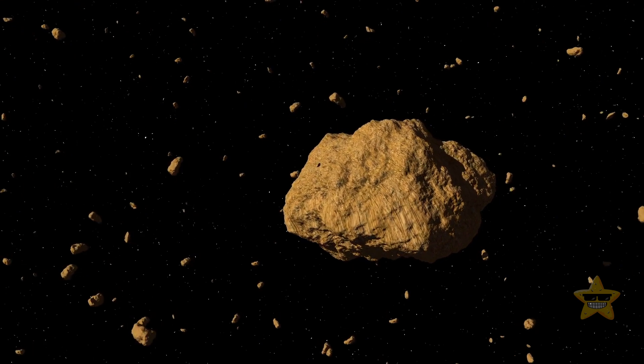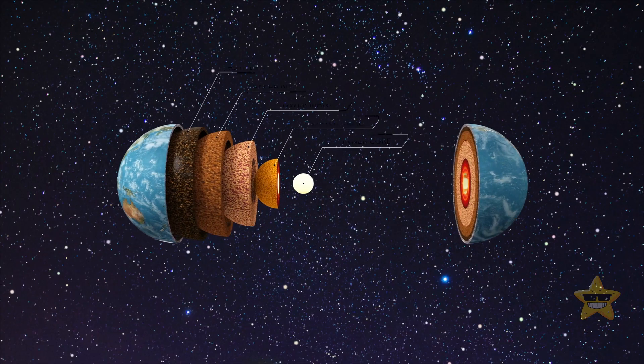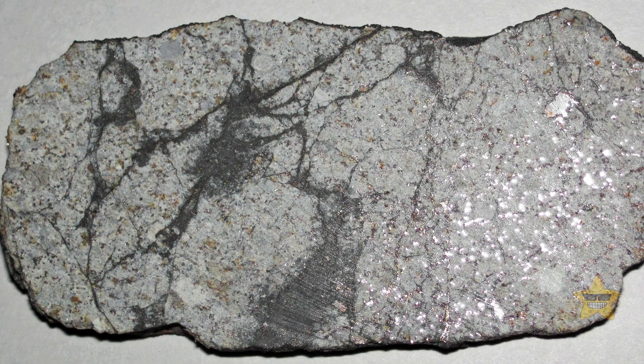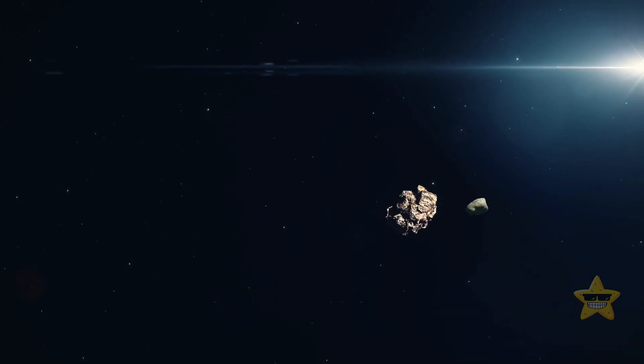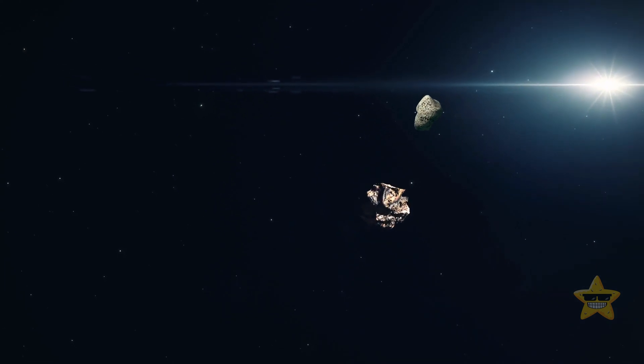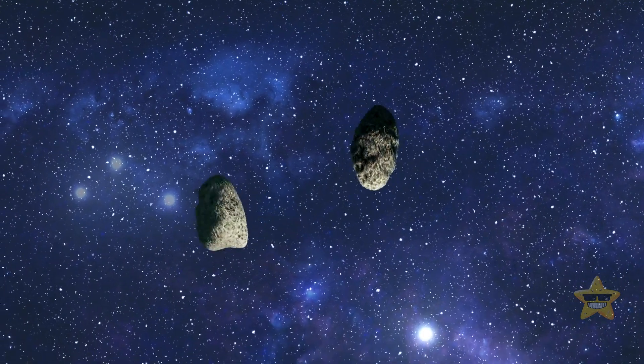Asteroids often have irregular shapes, especially smaller ones. At the same time, large space bodies can have more of a spherical shape.